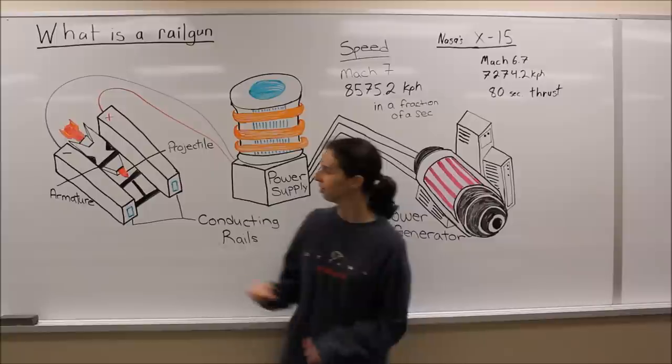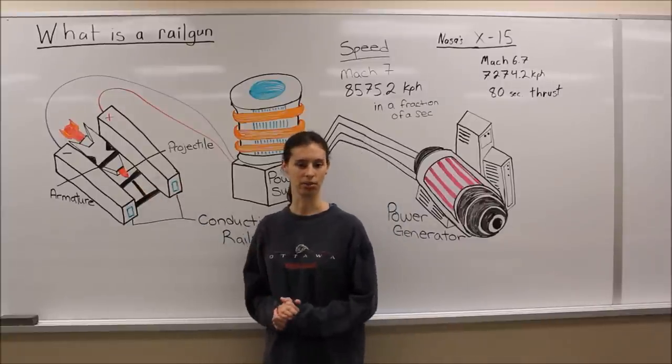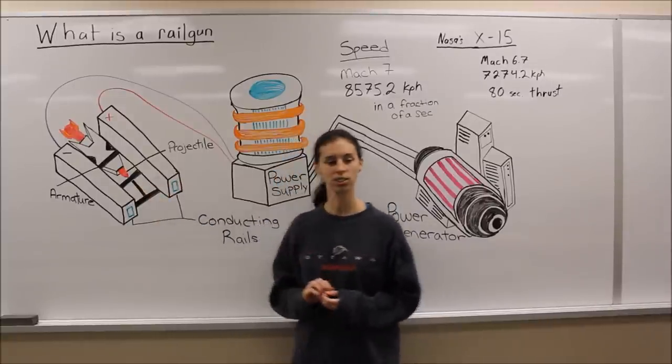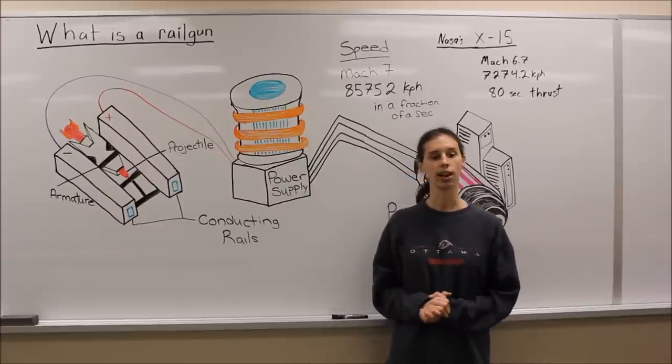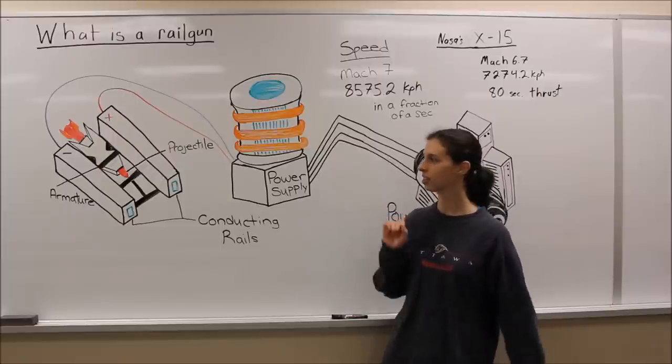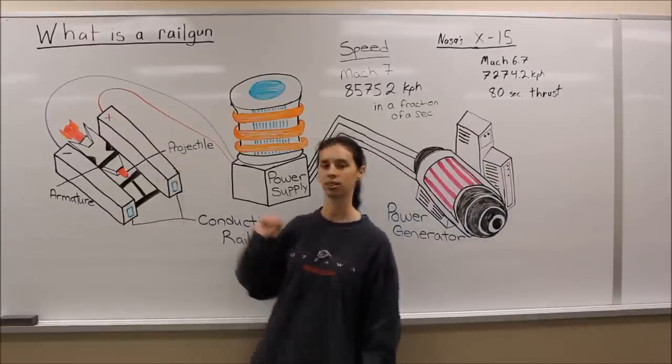And the third is that it needs an armature, which bridges the gap between the two rails. It is a conductive metal or a conductive sabot, and it houses the projectile, as you can see in red.